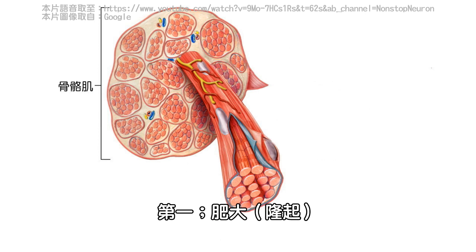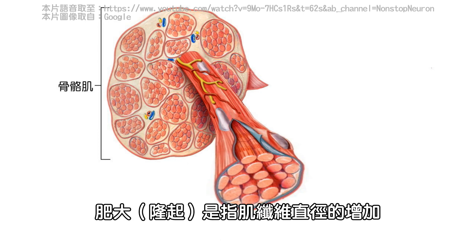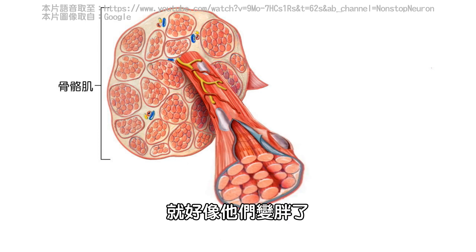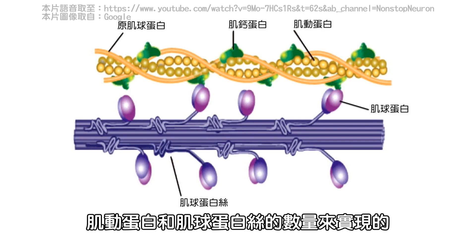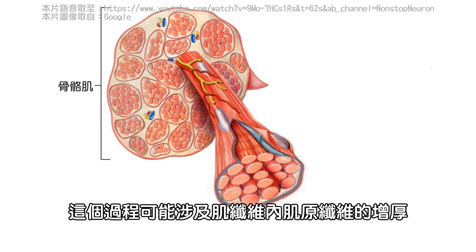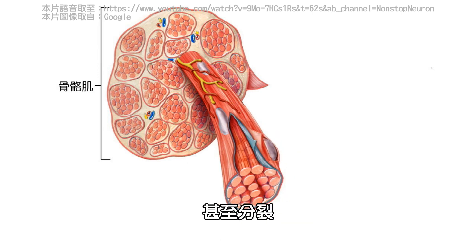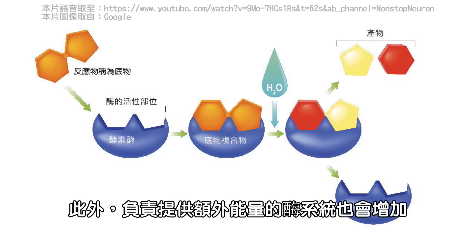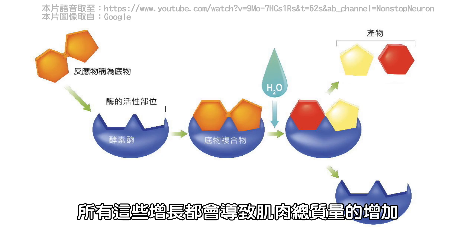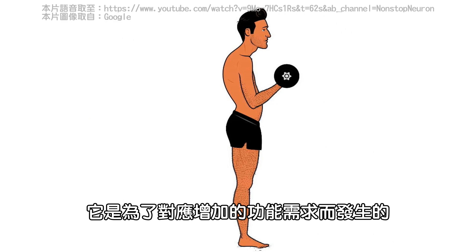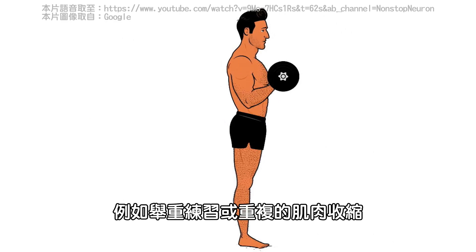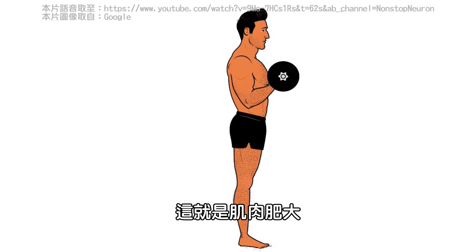First, hypertrophy. It means an increase in the diameter of the muscle fibers — it's like they get fatter. This is achieved by increasing the number of actin and myosin filaments in each muscle fiber. This process may involve thickening or even splitting of the myofibrils within the muscle fibers. Additionally, the enzyme system responsible for providing extra energy also increases. All this growth leads to an increase in the total mass of the muscle. It occurs in response to increased functional demands such as weight lifting exercises or repetitive muscle contractions.